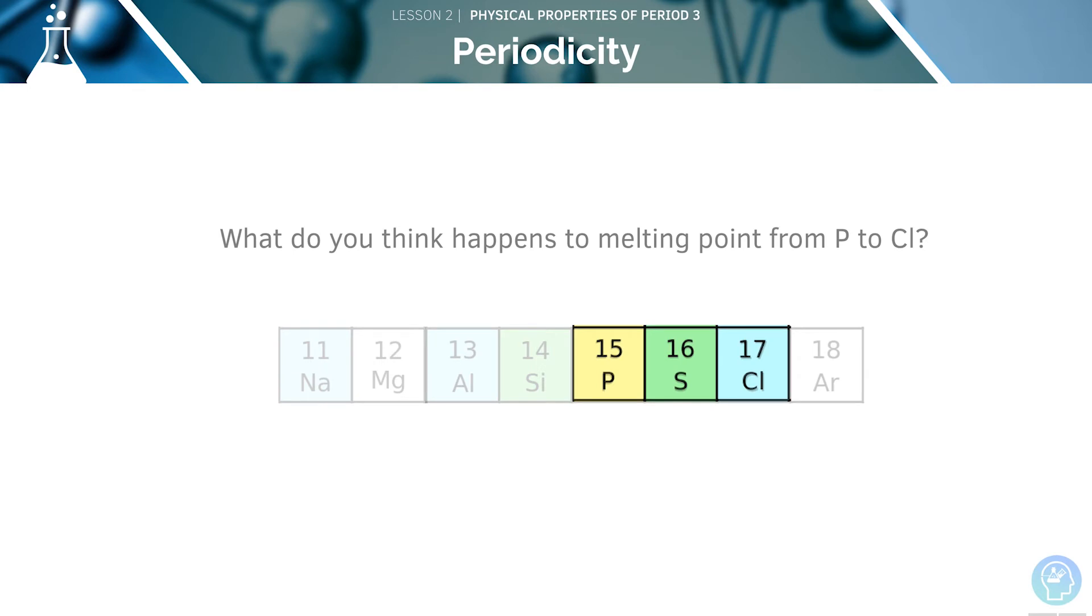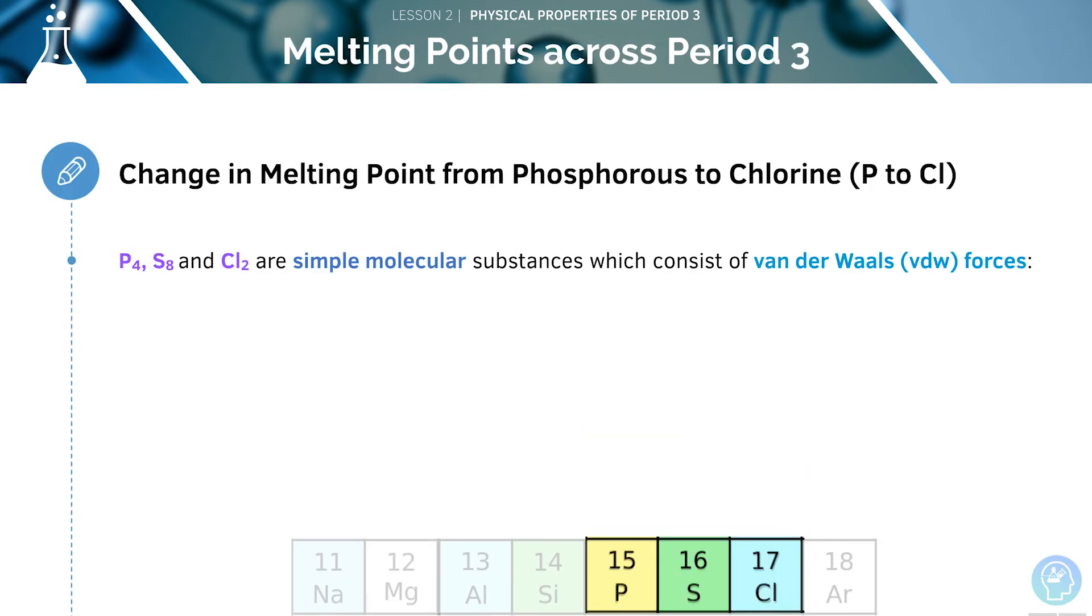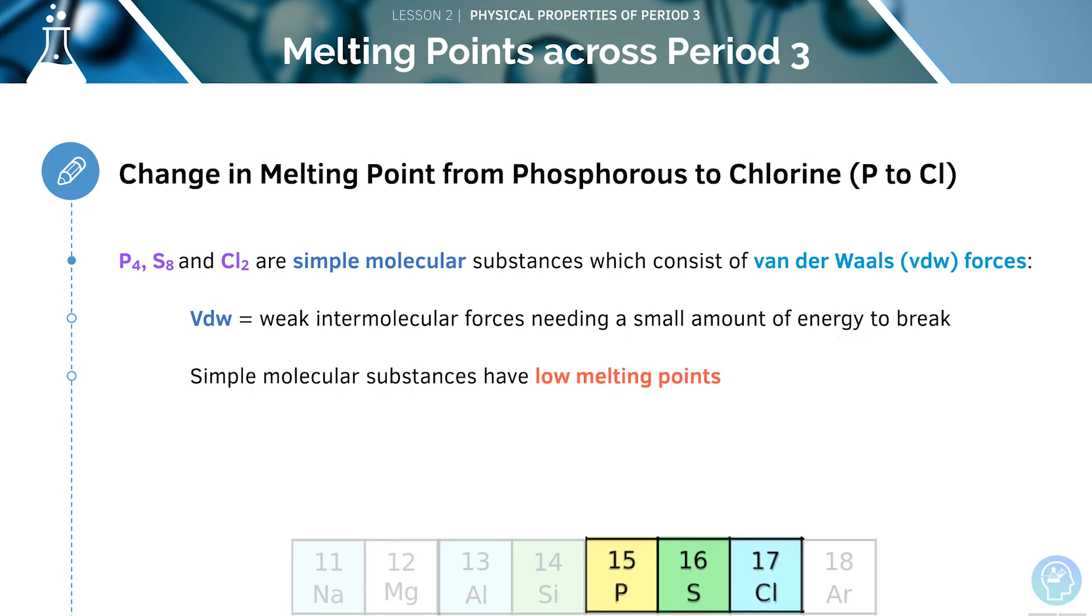How about phosphorus to chlorine? The melting point will increase, but sulphur has the highest melting point. Phosphorus, sulphur and chlorine are simple molecular substances which have van der Waals forces. As we learned earlier, van der Waals are weak intermolecular forces which only require a small amount of energy to break them. For this reason, the melting points of these simple molecular substances is very low.